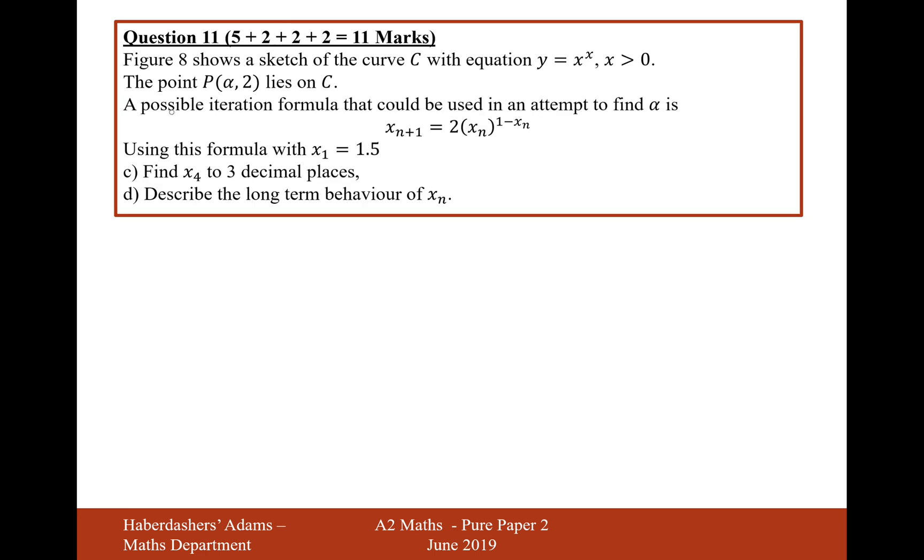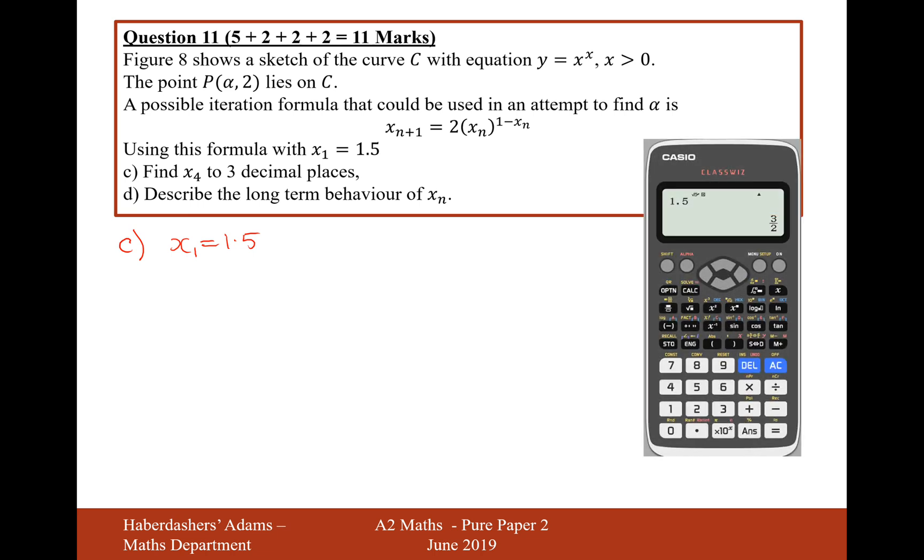Part c and part d. A possible iteration formula that could be used in an attempt to find alpha is x n plus 1 equals 2 times x to the n to the power of 1 minus x to the n. Using this formula with x1 equals 1.5, find x4 to 3 decimal places. So if x1 equals 1.5, this is the kind of question where you have to put 1.5 into your calculator and then use the formula. But instead of x, use answer button. So now this is going to input 1.5 in both places where xn is.